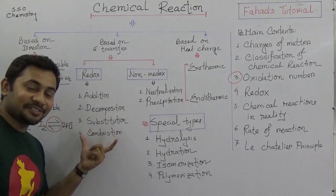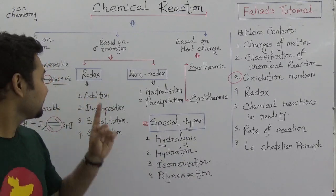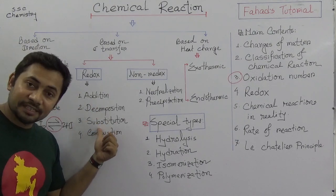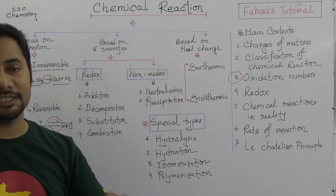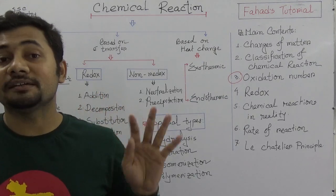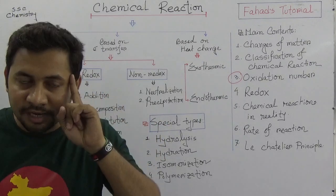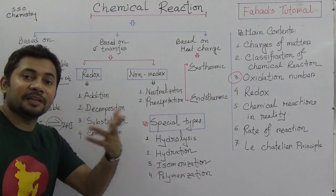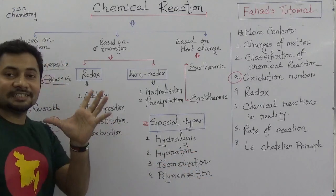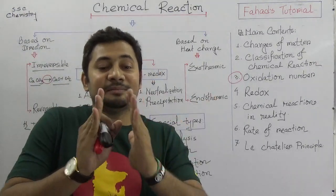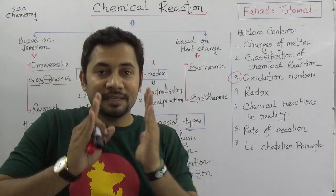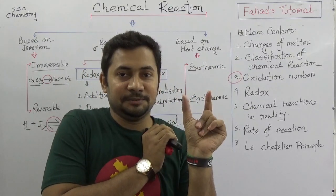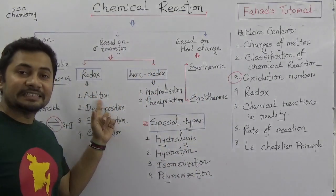Looking at the types of redox reactions — addition reaction, decomposition reaction, substitution reaction, and combustion reaction — these four are very important to memorize. The word itself explains the type. Addition means two or more reactants will react and form a single compound. For example, hydrogen and oxygen reacting to produce water, or nitrogen and hydrogen reacting to produce ammonia — these are addition reactions.